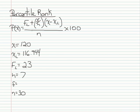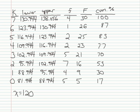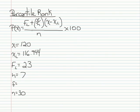f is the frequency of the interval containing the score. To find f, I go back to the interval that contains my score, and I look at the frequency. And that's 2. f is going to be 2.